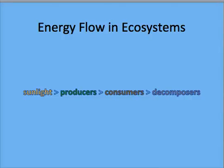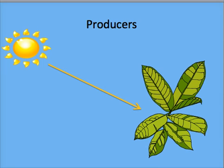Energy Flow in Ecosystems. Primary producers harness the energy from the sun. Plants containing chloroplasts use sunlight to convert water and carbon dioxide into glucose, which can be used by consumers.